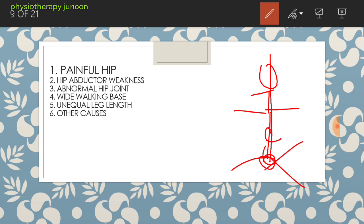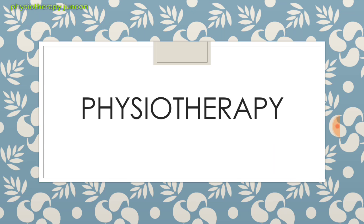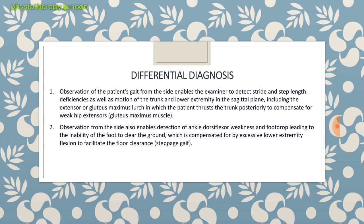Then we proceed to the evaluation part. Our physiotherapy starts from the evaluation. A detailed physical examination should be carried out to diagnose the condition of the abnormal gait. Other investigations include x-ray, ultrasonography, computed tomography CT scans, or magnetic resonance imaging MRI to diagnose the primary condition, and sometimes blood tests are also necessary.